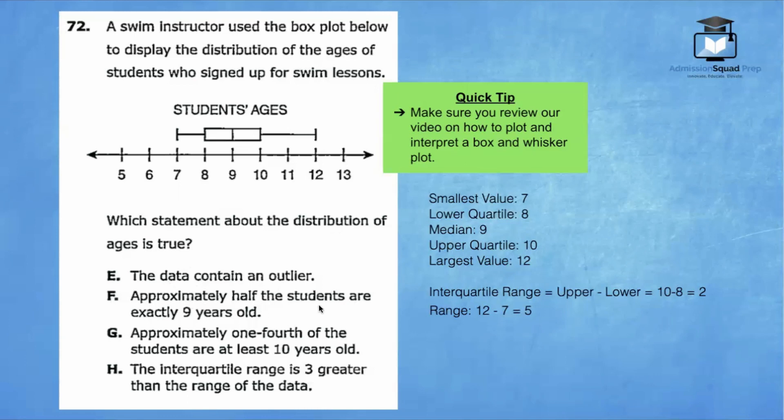Approximately half the students are exactly nine years old. That's not what the box plot tells us. There's no way for us to identify how many students are exactly nine years old. We just know that the median of the data set, meaning the student right in the middle, is nine. But we can't tell just how many nines we have.